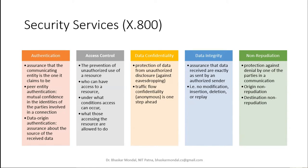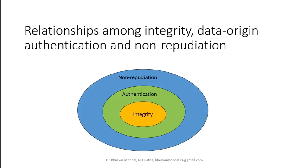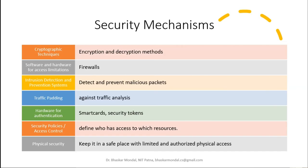Regarding the relationship among integrity, data origin authentication, and non-repudiation: integrity comes at the core — you need integrity first. Then comes authentication, where you can authenticate the source and the person sending data. Then comes non-repudiation, meaning both the source and destination sides should not be able to deny that they sent or received it.